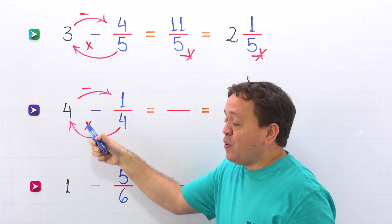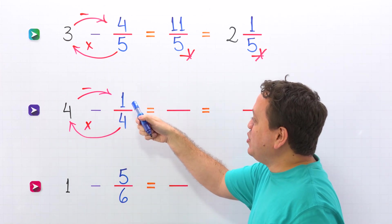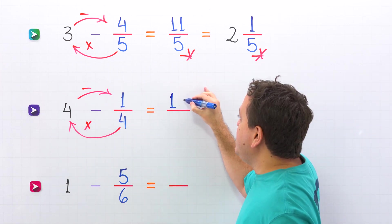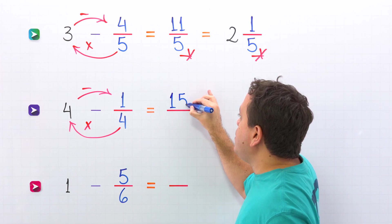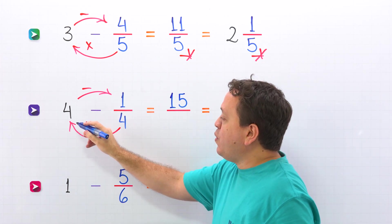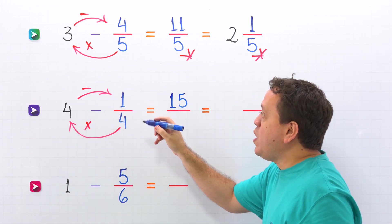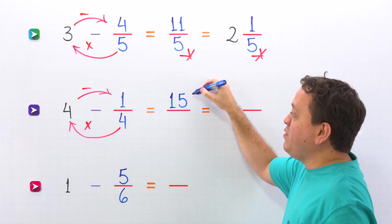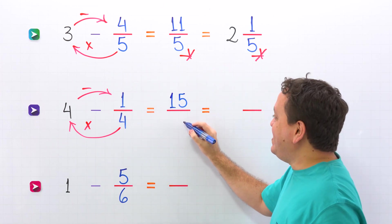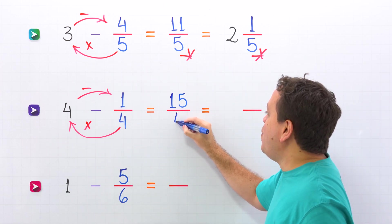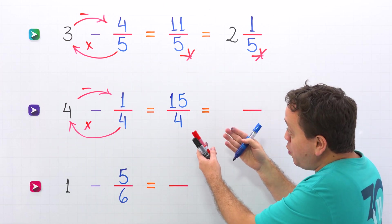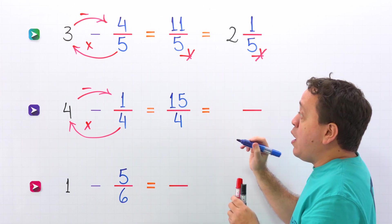4 times 4 is 16, minus 1 gives us 15. And then the denominator stays the same — 4 comes over here. Here we have 15 fourths.